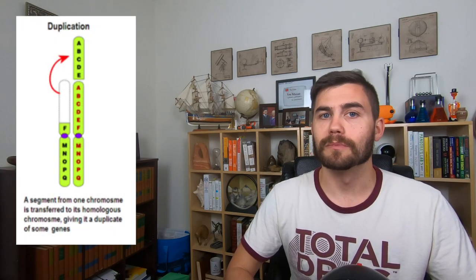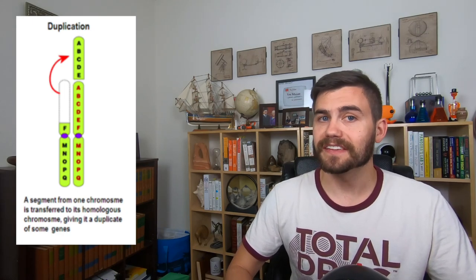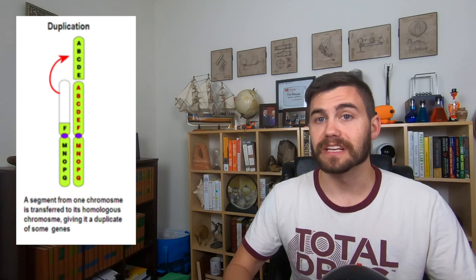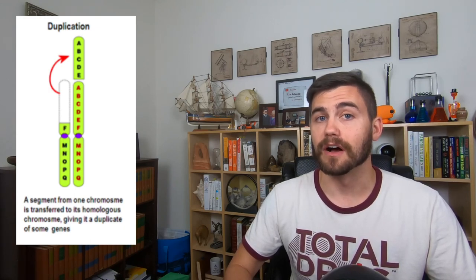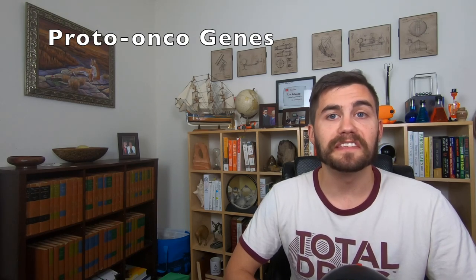Sort of the opposite of a deletion is a duplication, where a chromosome ends up with extra genetic material. We can imagine this happening for the same reason a deletion happens, but we are focusing on the chromosome that received information and didn't give any back. In humans, we have what are called proto-oncogenes. These are genes that commonly lead to cancer if they are mutated. If an individual receives duplications of proto-oncogenes, that puts them at higher risk for certain cancers.